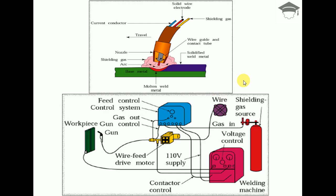Watch the video till the end, you'll definitely find it very useful. Let's start. The top figure represents the diagram where we have the base metal, the arc, how it is produced, the solid wire, and solidified weld metal.